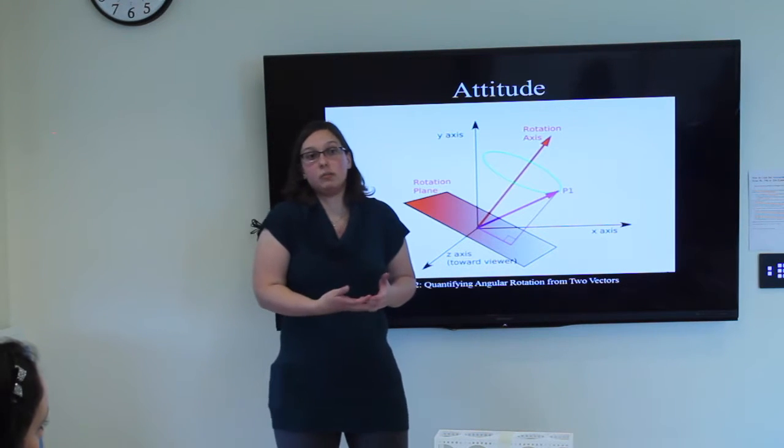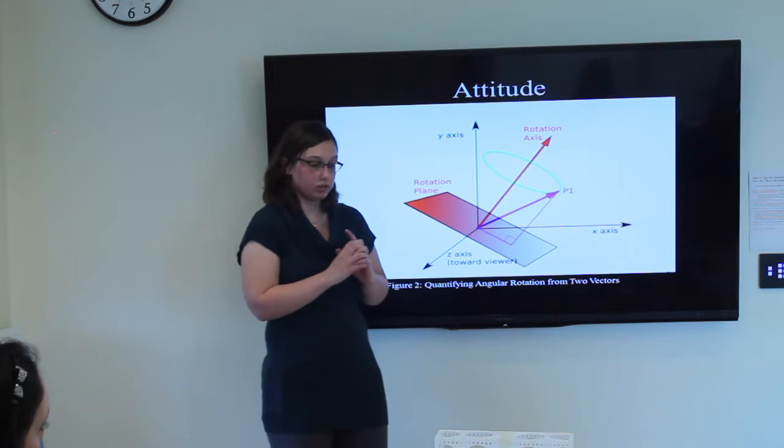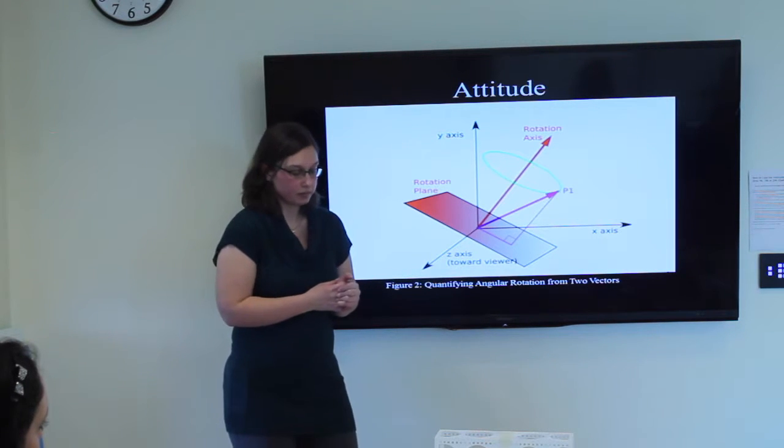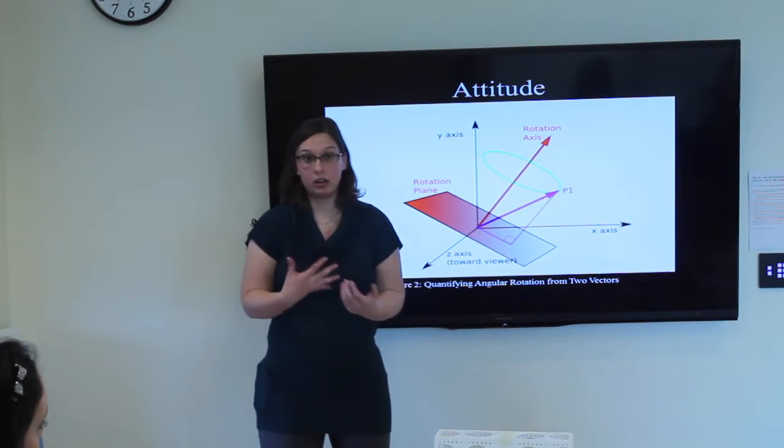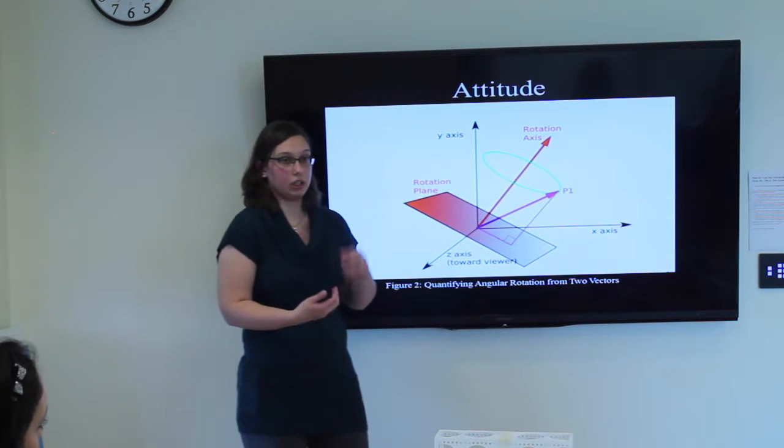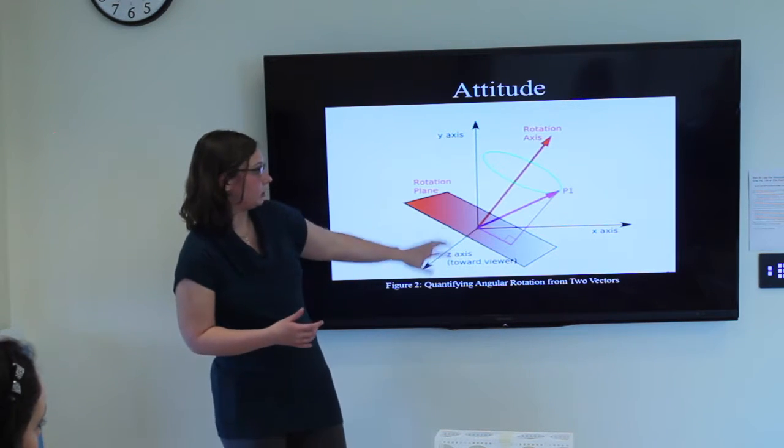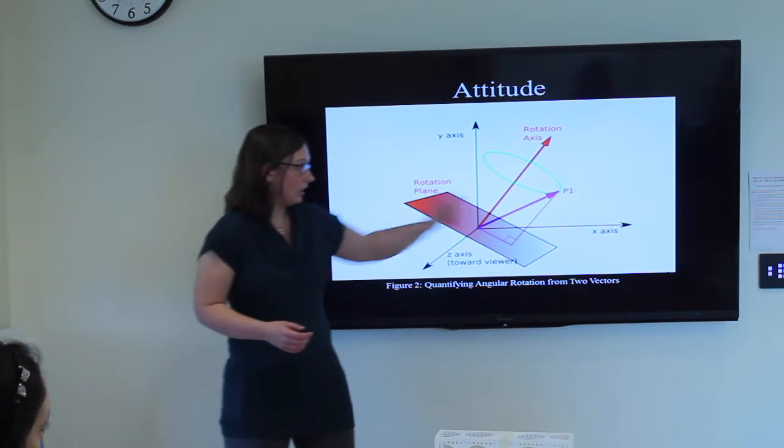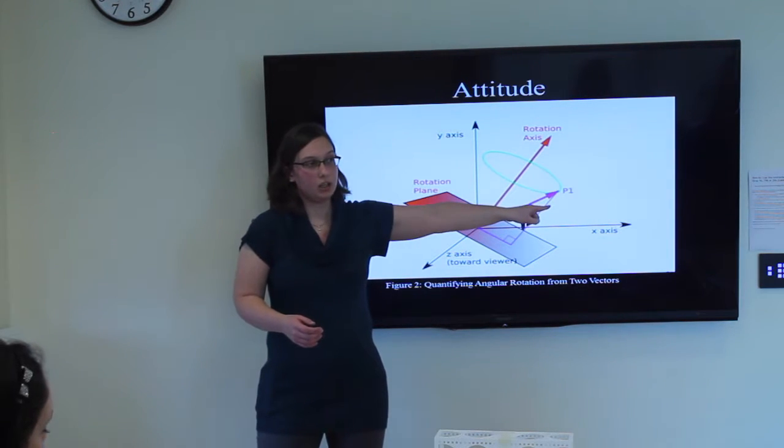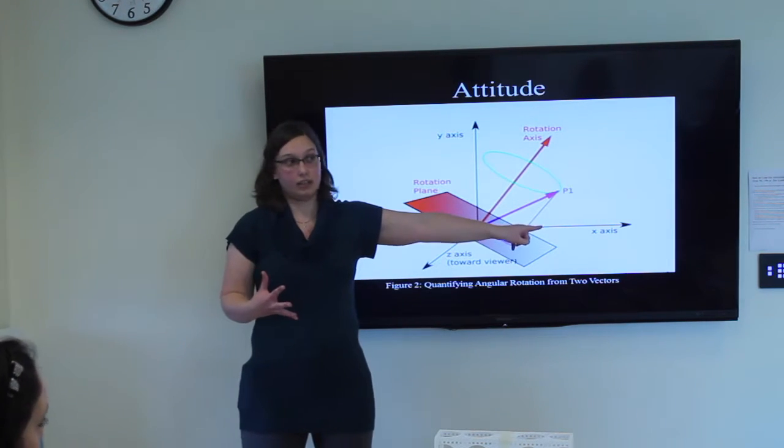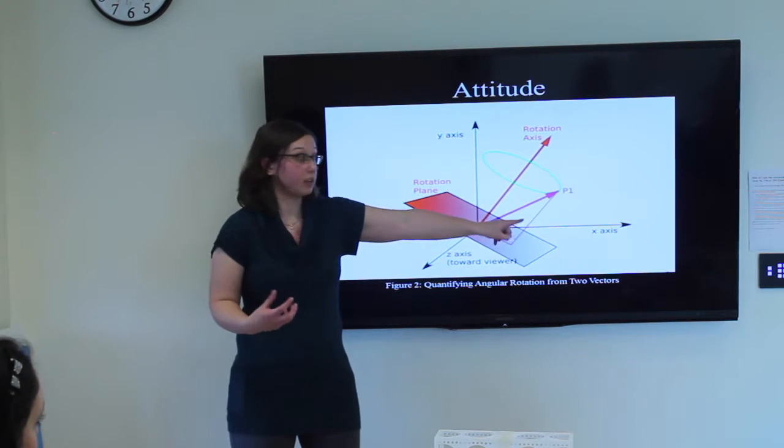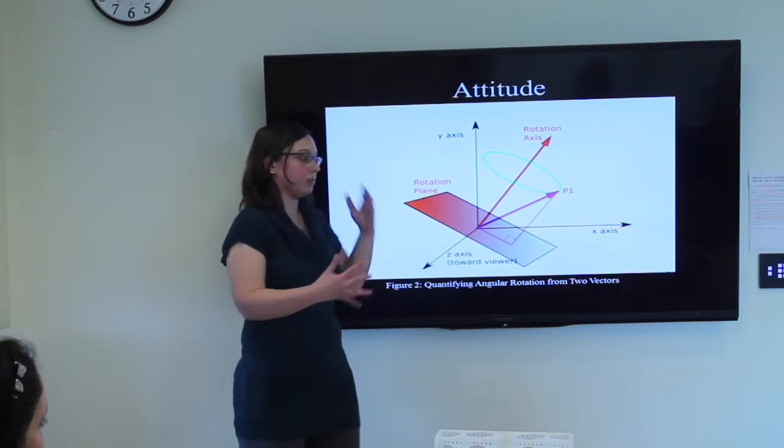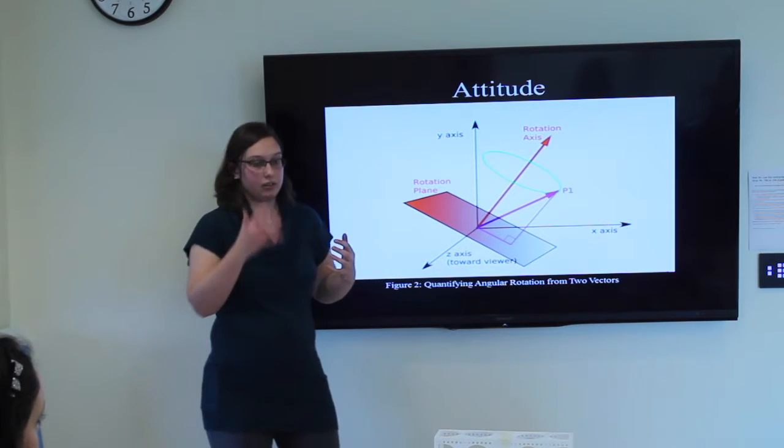The first step is attitude determination. How do we achieve this? We create vectors through sensor data. These vectors can tell us a little bit about the rotation of our satellite. The image up here shows a rotation plane with its rotation axis as the normal. This vector right here, P1, can be like a sensor data. Let's say it's like a sun sensor or a magnetometer.